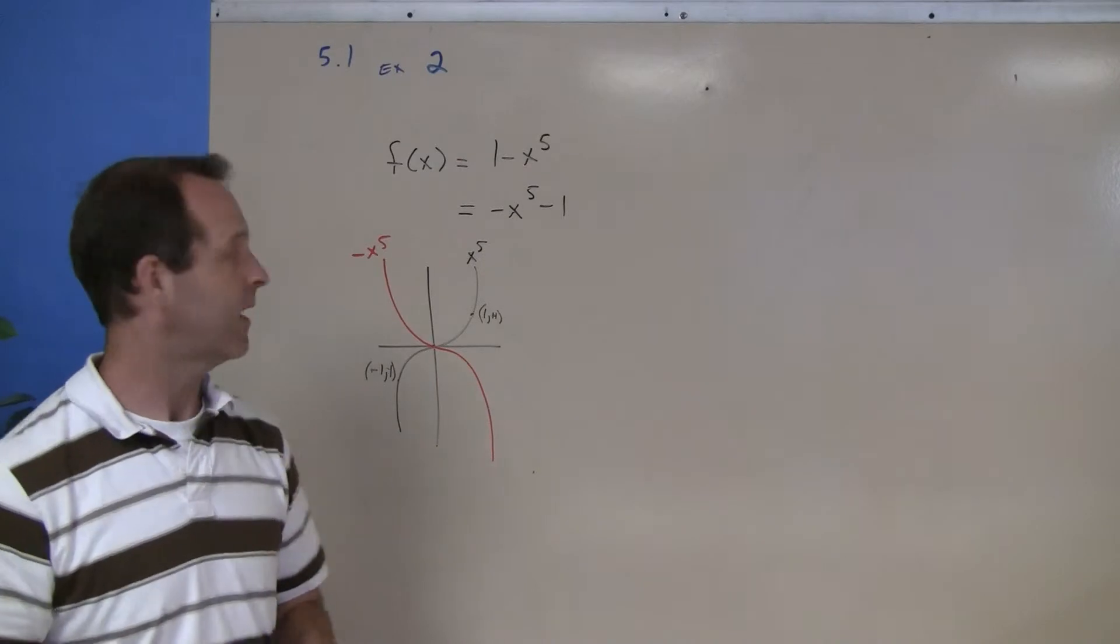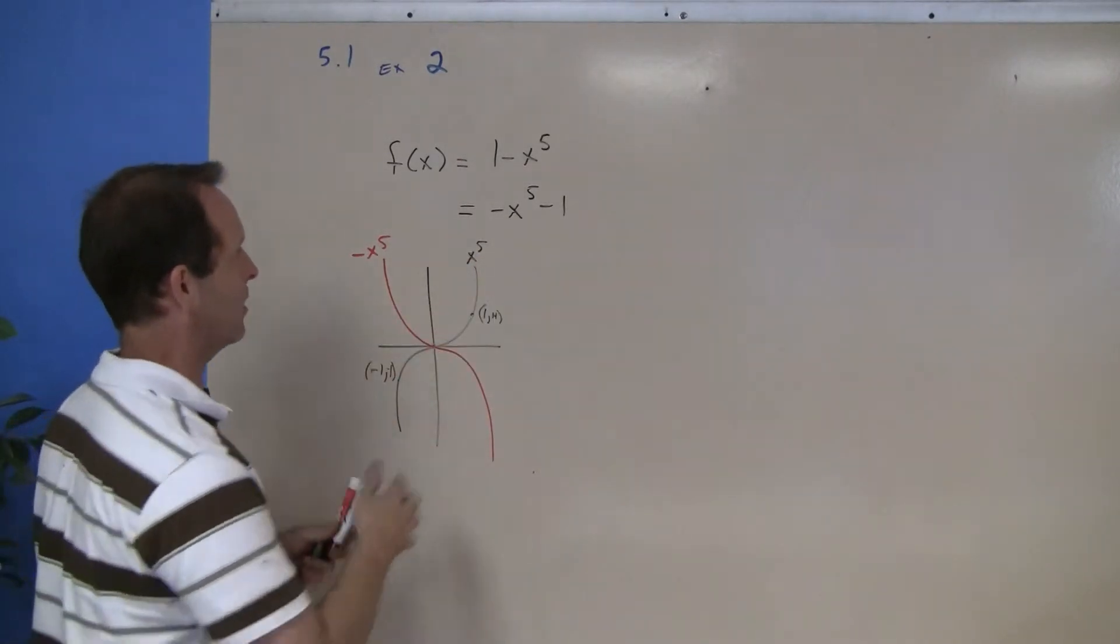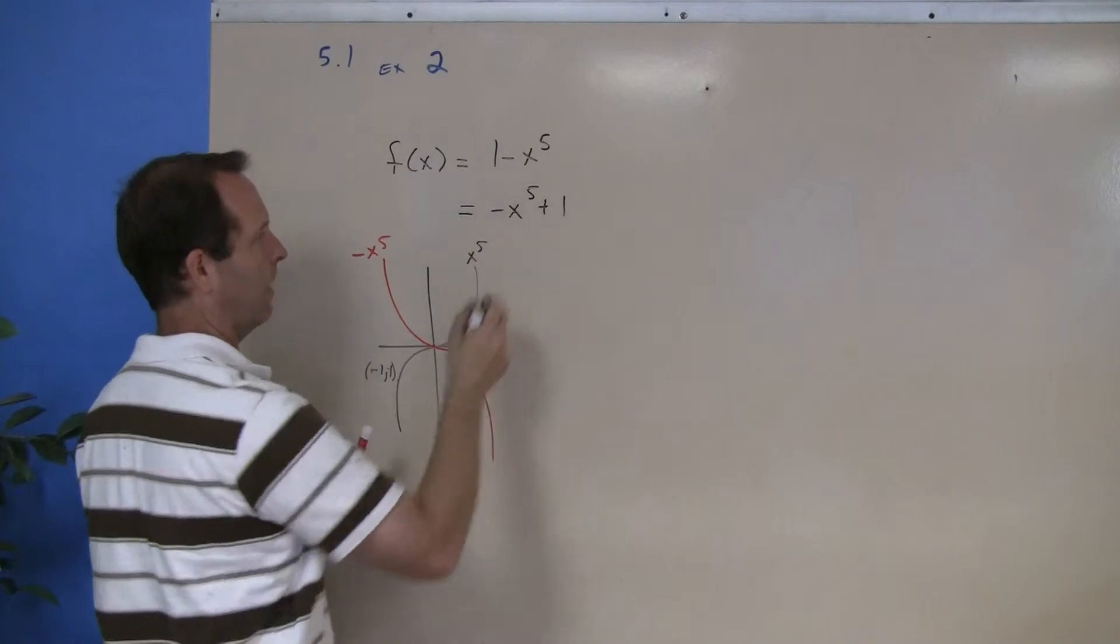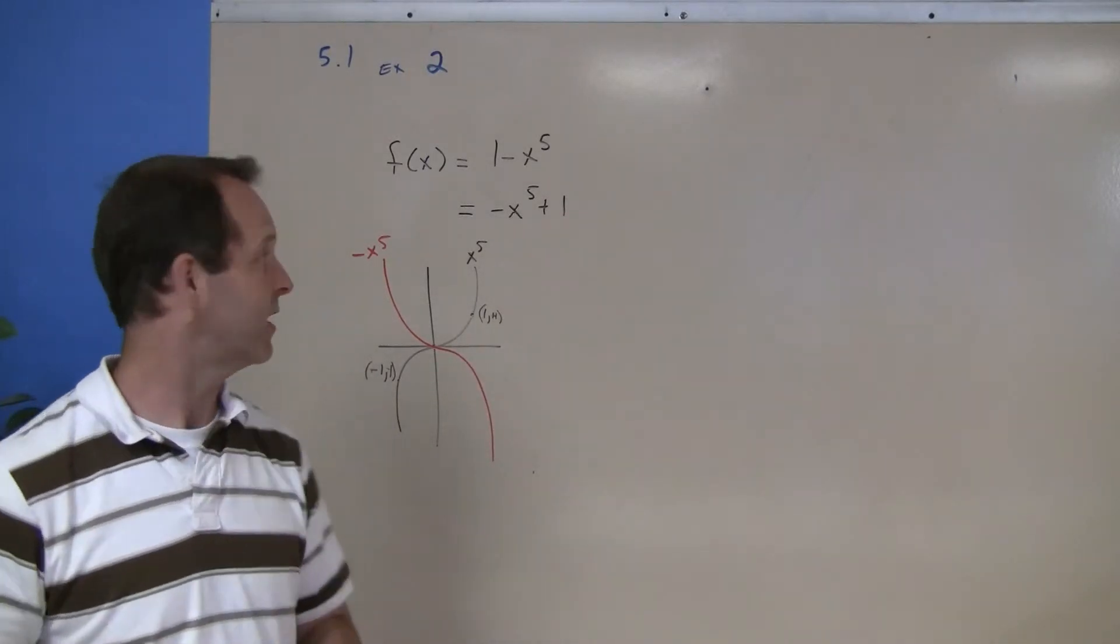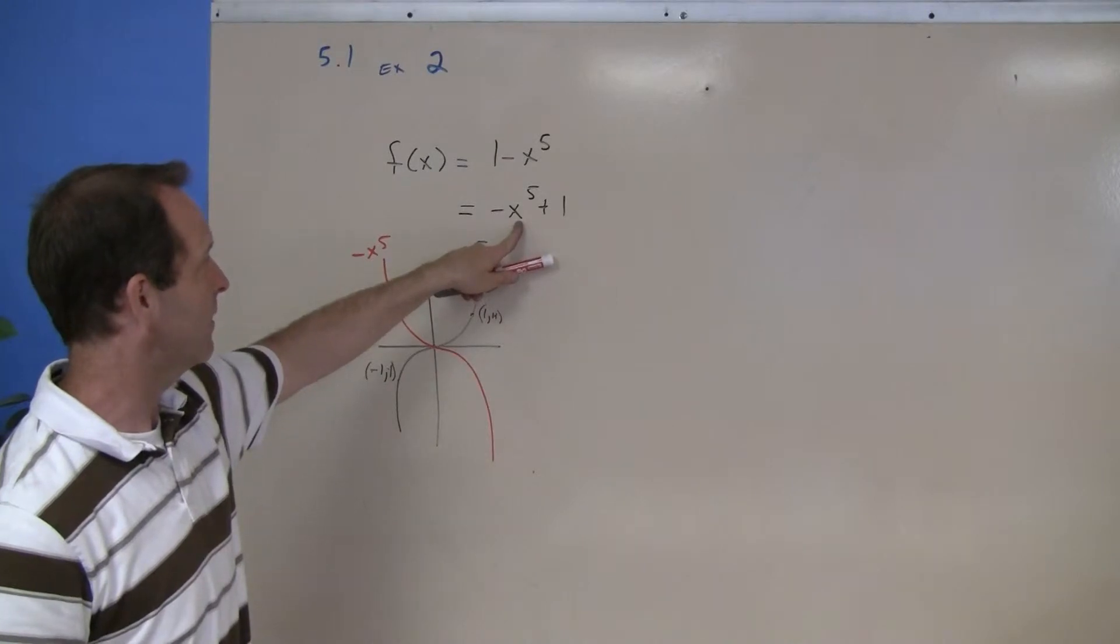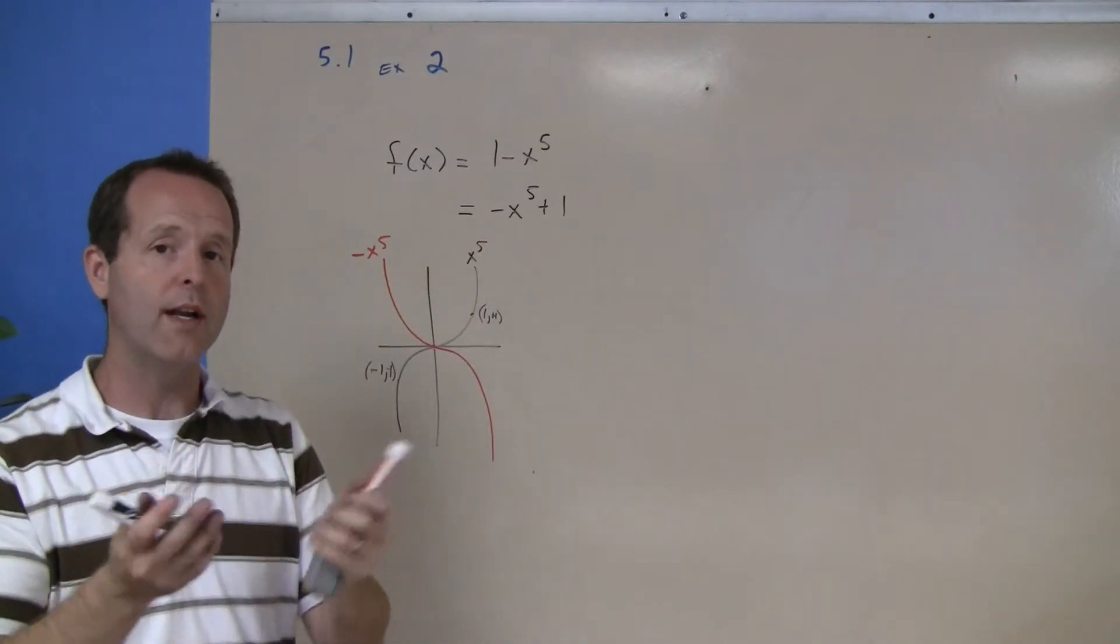And then lastly I have a positive 1. What does that 1 do? Well, that takes the function negative x to the fifth and moves it up 1 everywhere.